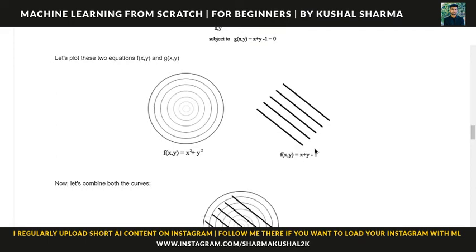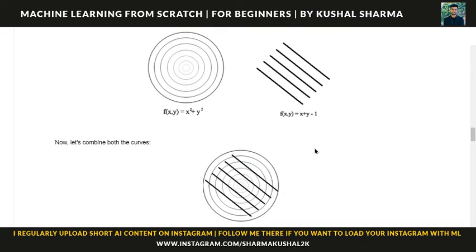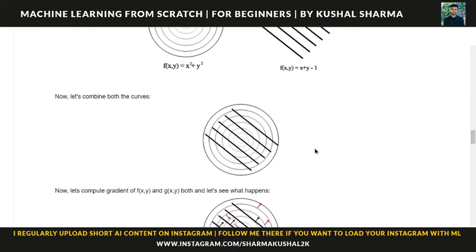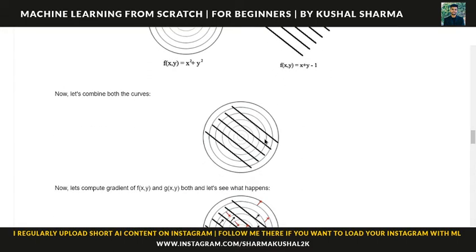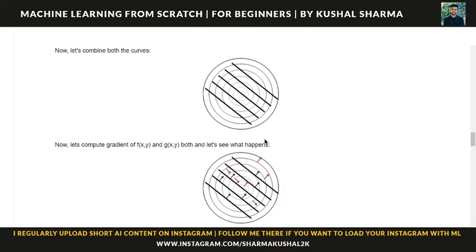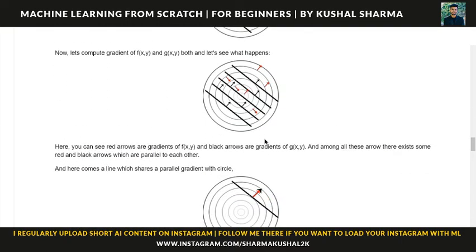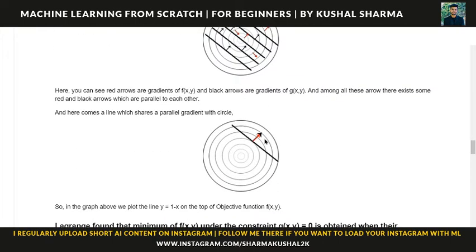We made figures based upon both equations and then combined them to find the minimum point — whatever thing we want to minimize. In order to find the minimum point of the family of circles, we need to join both the family of lines and family of circles. According to Lagrange, the point of minimum will be the point where both lines will be superimposed.